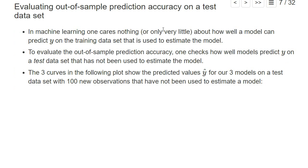In machine learning, one cares very little about how well a model can predict y on the training dataset used to estimate the model. To evaluate out-of-sample prediction accuracy, one checks how well models predict y on a new dataset.